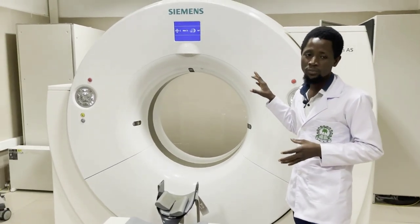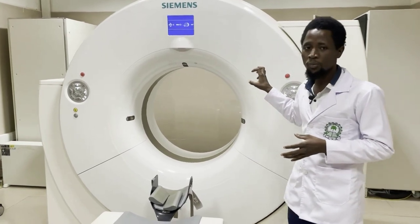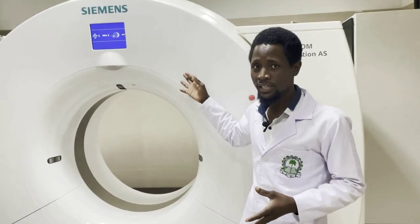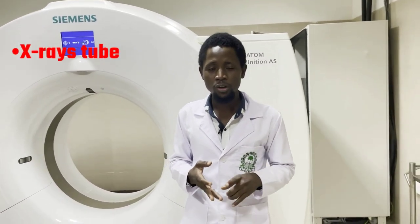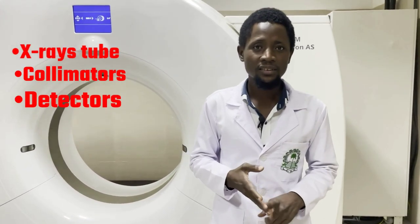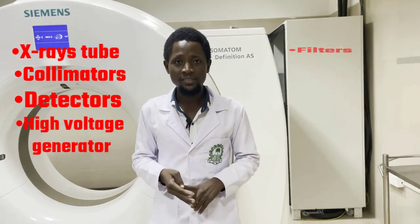There is also the internal component of the anterior side of the gantry. Anteriorly and internally, the gantry is mounted with different components which include: X-ray tube, collimators, detectors, high voltage supply, filters, and data acquisition system. The X-ray tube is used to generate X-rays.